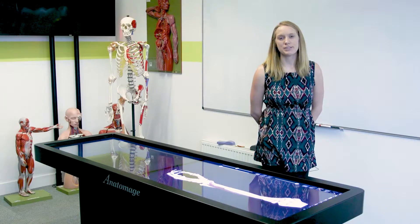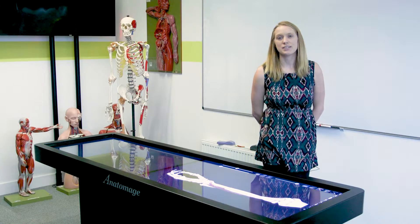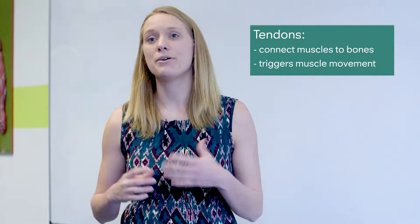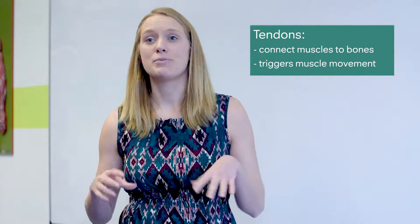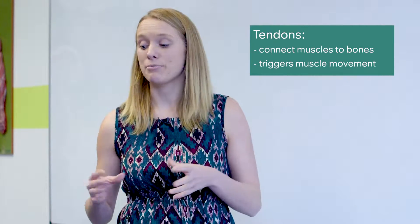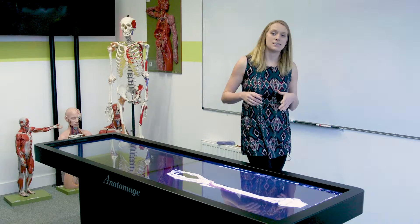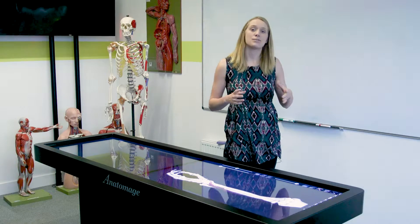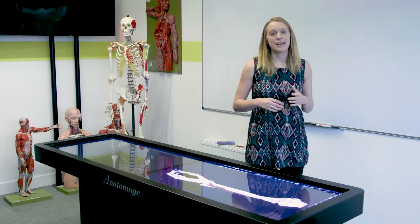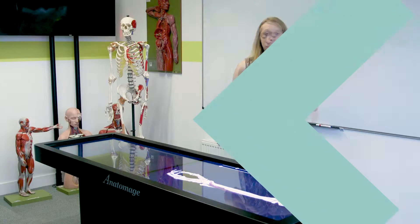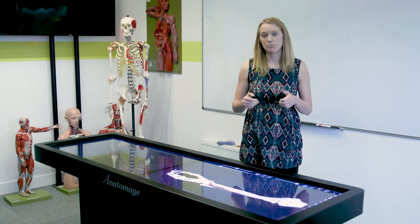I'm going to talk a bit about tendinitis. Tendons are the structures that connect our muscles to our bones and allow the muscle movements to actually make an effect — a movement on our joints. What tendinitis is, it's pain in those tendons. It's often caused by inflammation. It can happen in many different regions of the body, but I'm going to talk about when it happens in the thumbs.